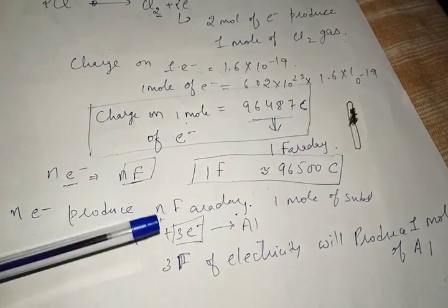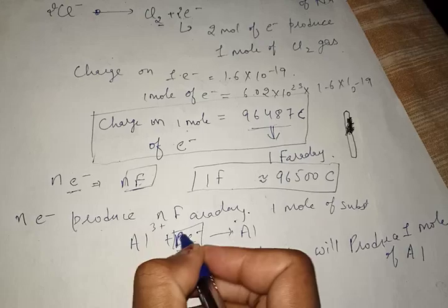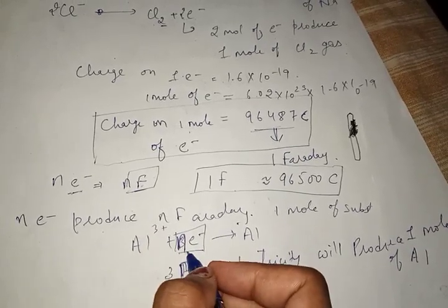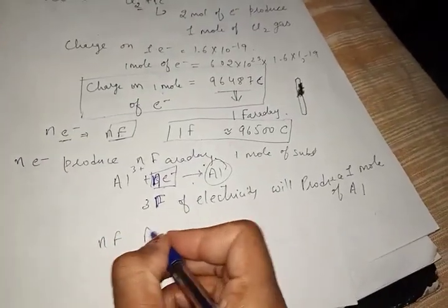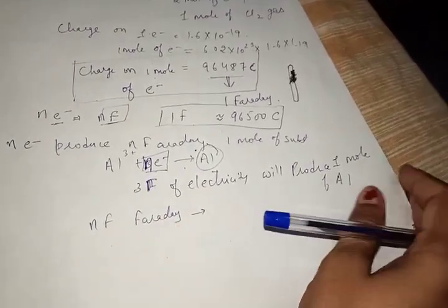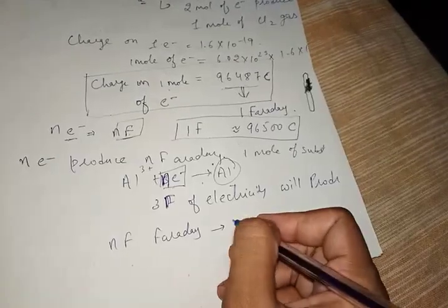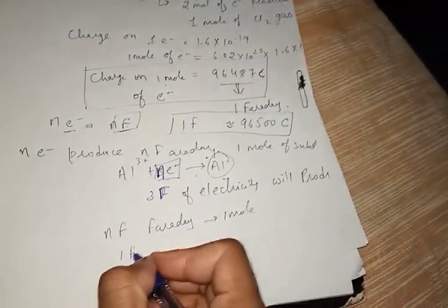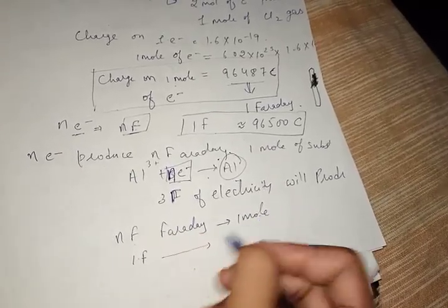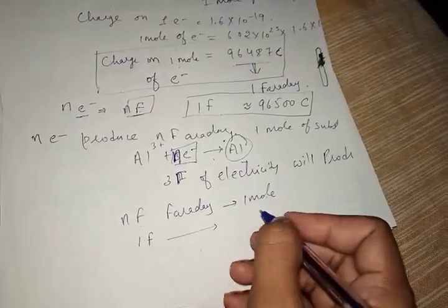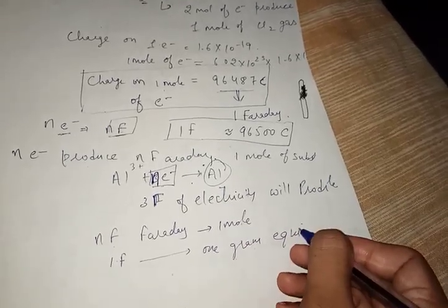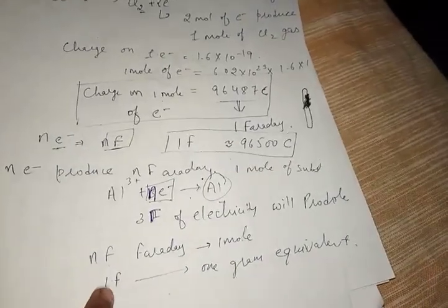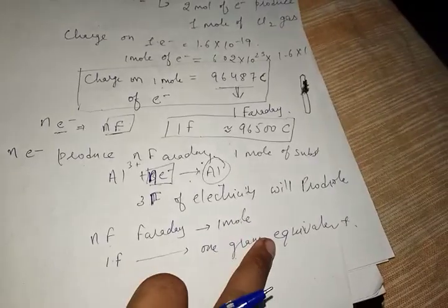Generally, if N electrons are required in a reaction, then N Faradays of electricity will produce 1 mole of the substance. The equivalent weight is atomic weight divided by number of electrons lost or gained. Therefore, 1 Faraday of electricity will deposit 1 gram equivalent of substance.